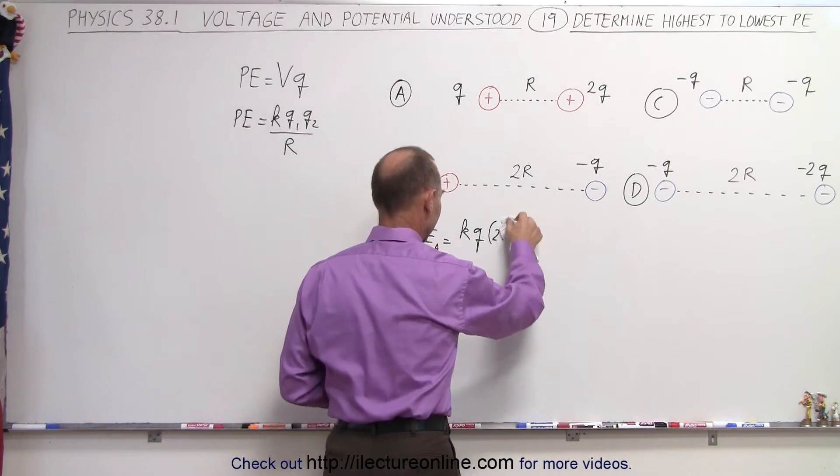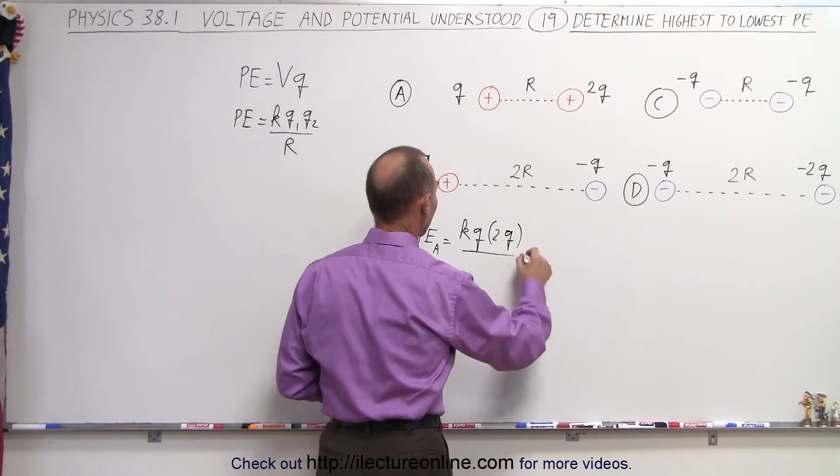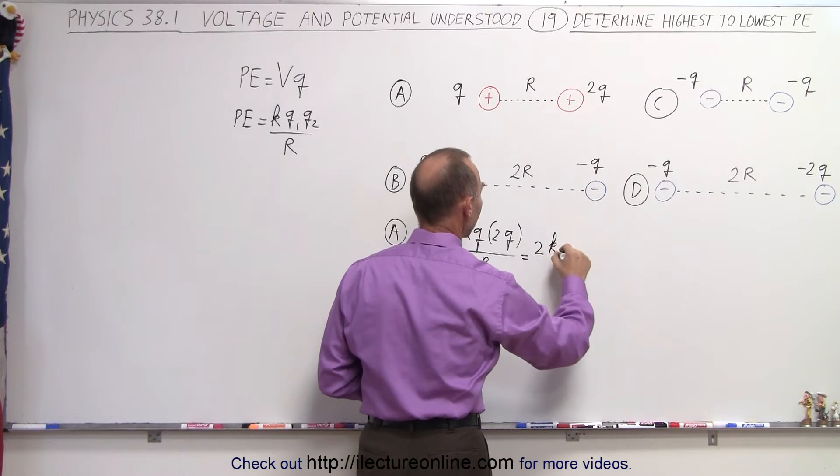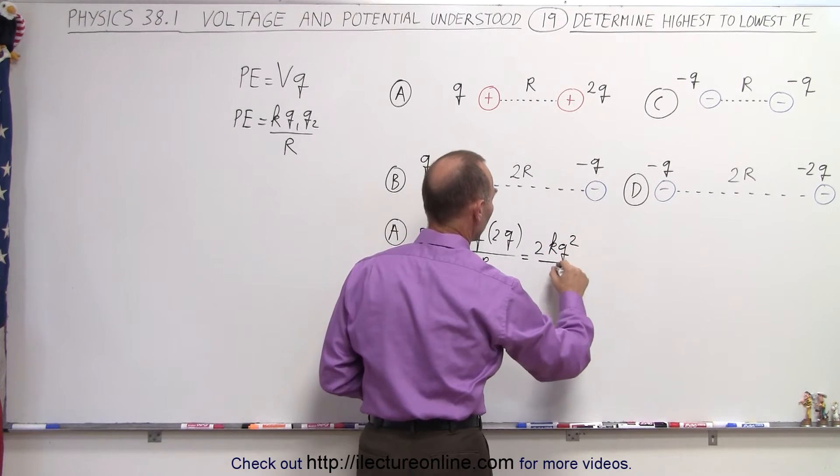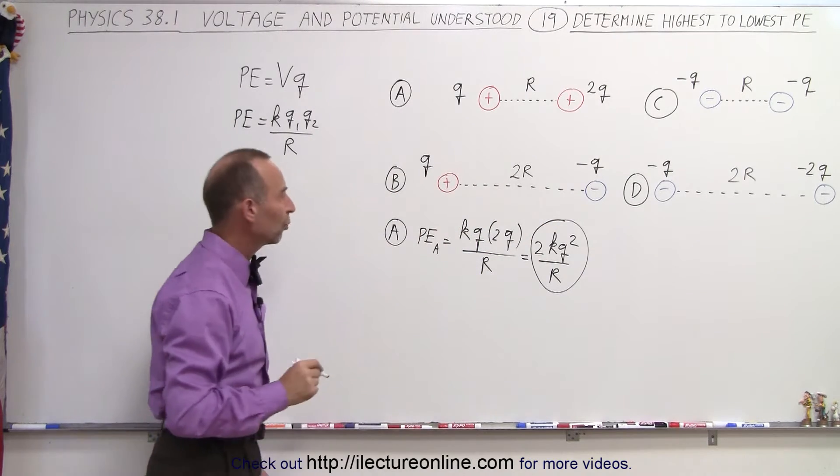2Q divided by the distance, which is R. So this is going to be 2KQ squared over R. So that's the potential energy for situation A.